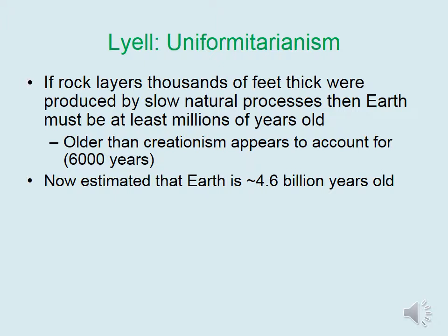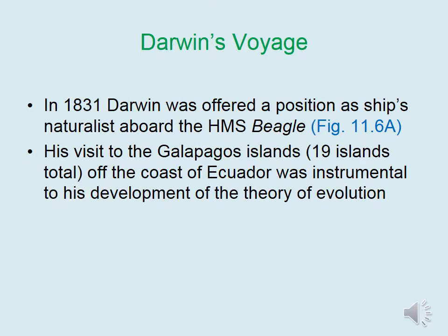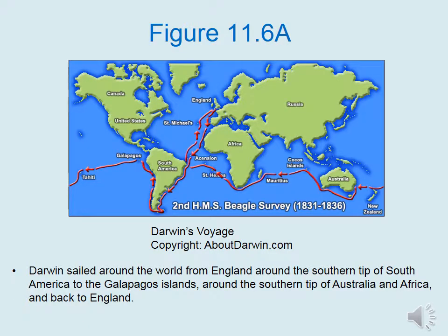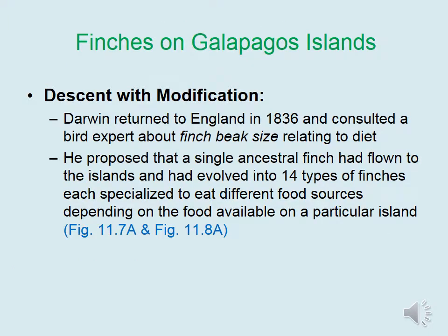You can count the layers of rings in a tree trunk to estimate its age. In 1831, Darwin was offered a position as a ship's naturalist aboard the HMS Beagle. His visit to the Galapagos Islands — 19 islands total off the coast of Ecuador in South America — was instrumental to his development of the theory of evolution. Darwin sailed around the world from England, around the southern tip of South America to the Galapagos Islands, around the southern tip of Australia and Africa, and back to England. Darwin returned to England in 1836 and consulted a bird expert about finch beak size relating to diet. He proposed that a single ancestral finch had flown from the mainland to the islands and evolved into 14 types of finches, each specialized to eat different food sources depending on the food available on a particular island.